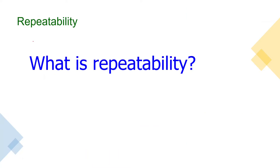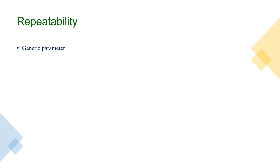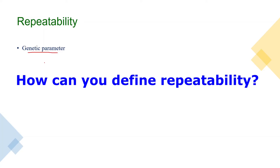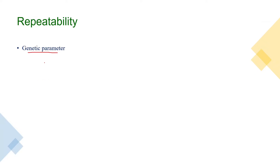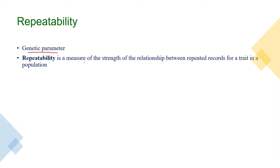So what is repeatability? Repeatability is actually a genetic parameter, same like heritability. Repeatability can be defined as a measure of the strength of the relationship between repeated records for a trait in a population.